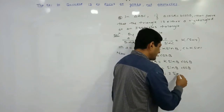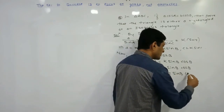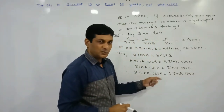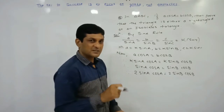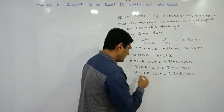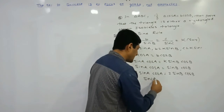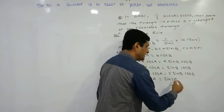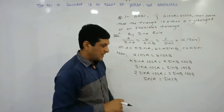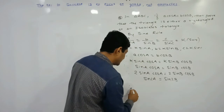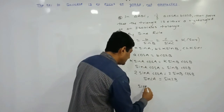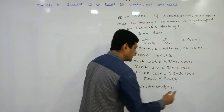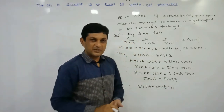Using the double angle formula 2·sin θ · cos θ = sin 2θ, the left-hand side becomes sin 2A and the right-hand side becomes sin 2B. Rearranging: sin 2A − sin 2B = 0. Now the terms are in the form sin C − sin D, so we can apply the factorization formula.